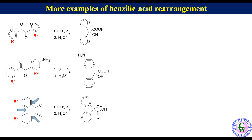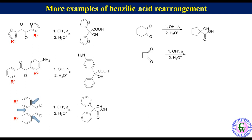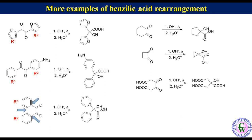Benzylic acid rearrangement is also observed in aliphatic 1,2-dione systems, but generally with low yield because of competing aldol condensation. Examples include the conversion of cyclohexane-1,2-dione to 1-hydroxy-cyclopentane carboxylic acid, the conversion of ketopenic acid to citric acid, and the conversion of tetramethyl-cyclohexane-dione to hydroxy-tetramethyl-cyclopentane carboxylic acid.